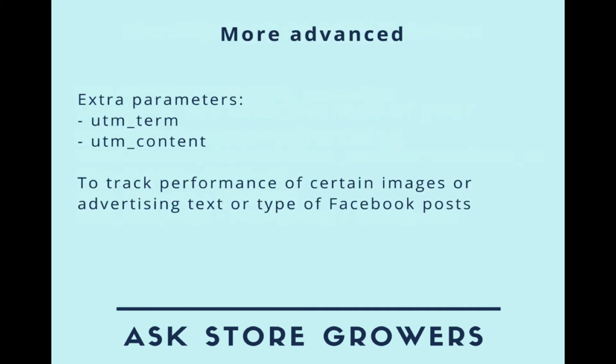If you're getting familiar with this type of parameters, you can also include more of them. Mainly there's UTM_term and UTM_content. These are used to track the performance of certain posts you make to Facebook, certain images that you use, or advertising text that you're using. This way you get an even more granular view on your performance.